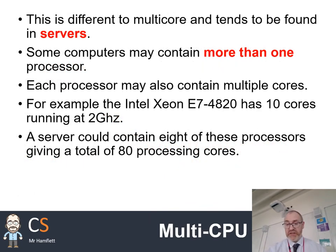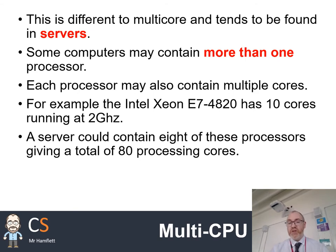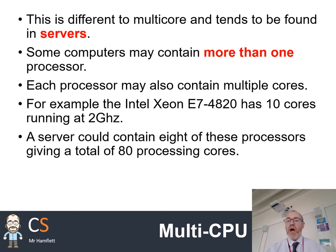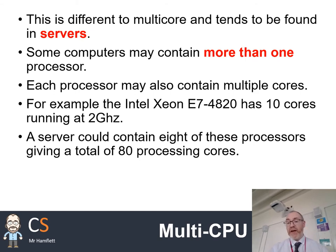Some computers — specifically servers — will not only have multiple cores inside the CPU, they'll actually have multiple CPUs. These CPUs themselves may also have multiple cores. For example, the kind of processor found in servers tends to be Intel Xeons — the E7-4820 has 10 cores each running at 2 GHz. These are designed to allow you to do lots of tasks simultaneously, such as managing lots of user requests at the same time on a web server. With 8 CPUs each having 10 cores, you effectively have 80 processing cores.